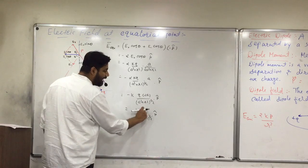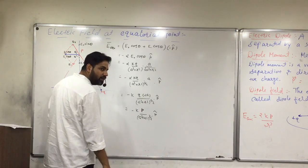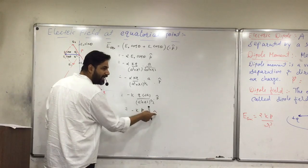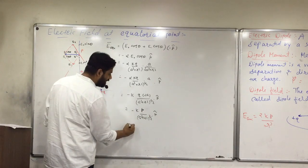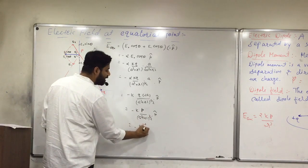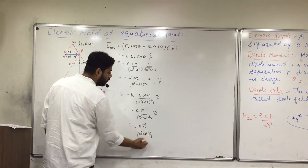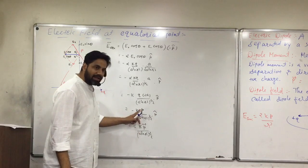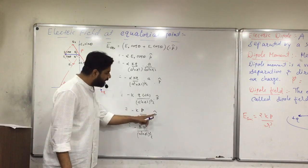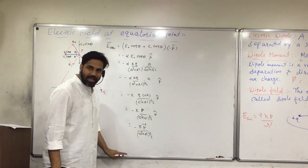We can write this directly as minus k p-vector, since p-vector means p into p-hat. So we can say it is minus k p-vector divided by (a squared plus r squared) raised to 3/2. p-vector contains both the magnitude of p and its direction.